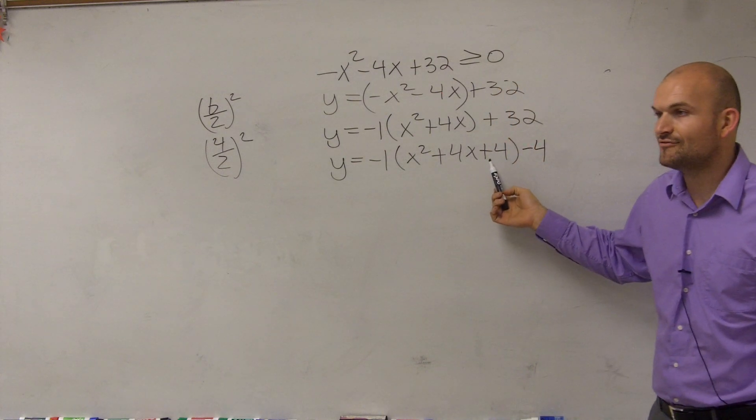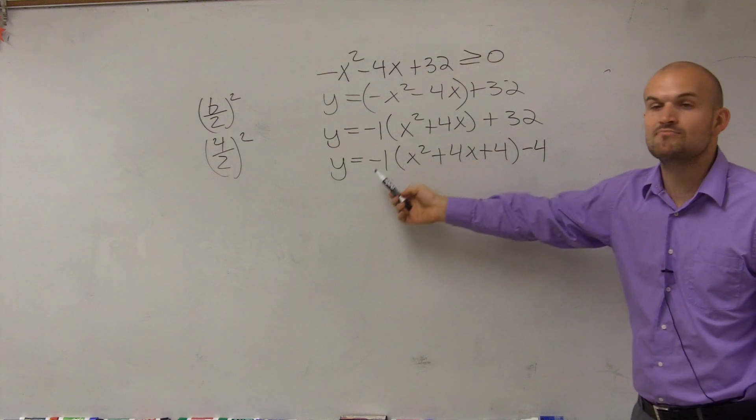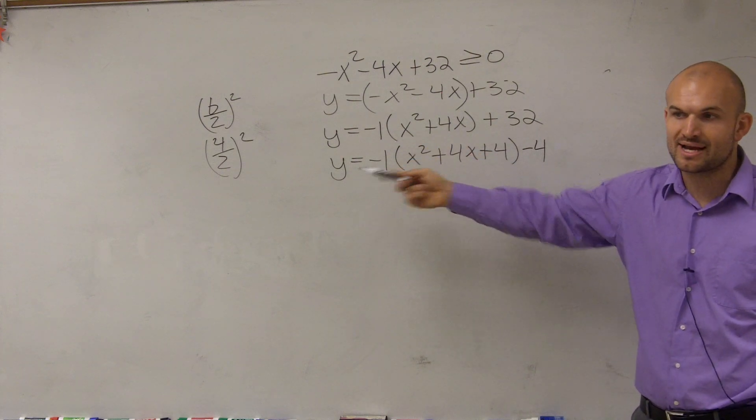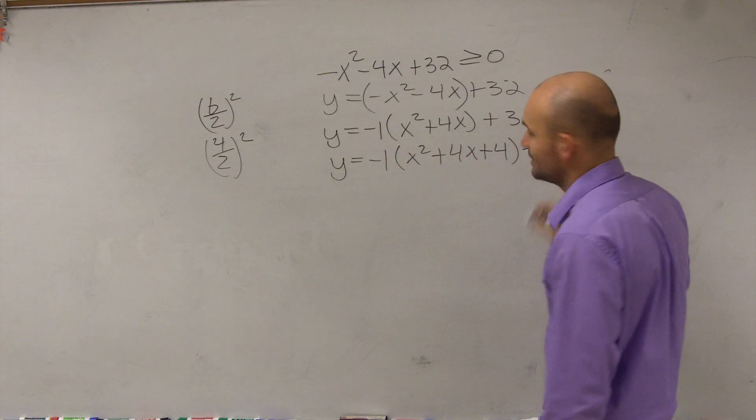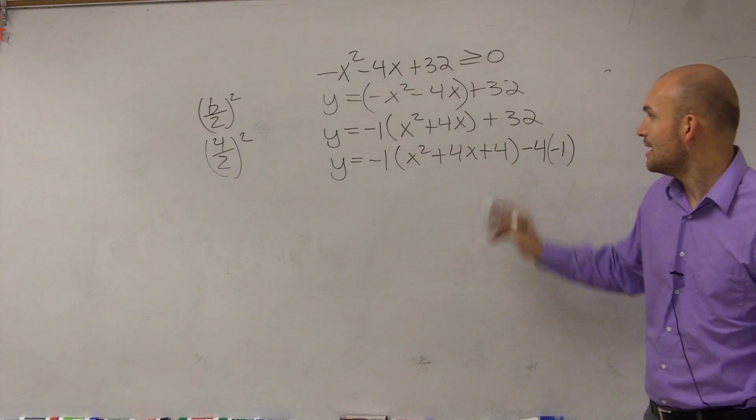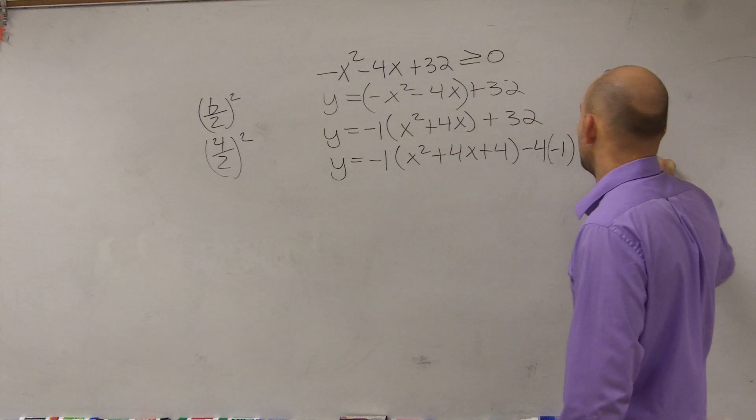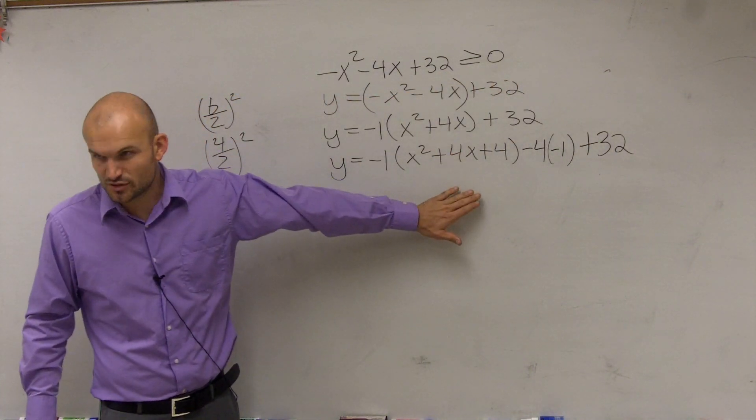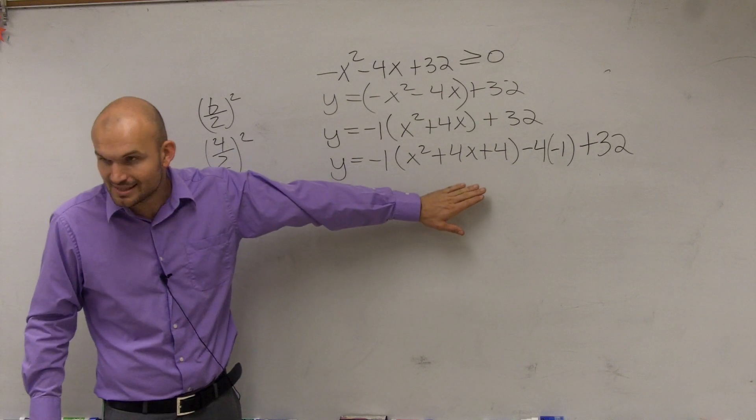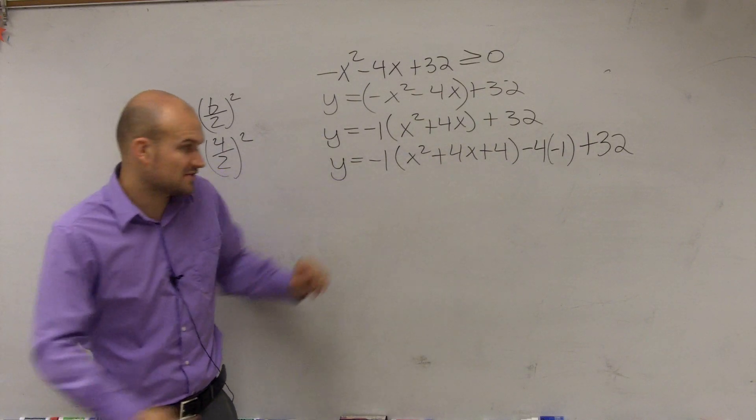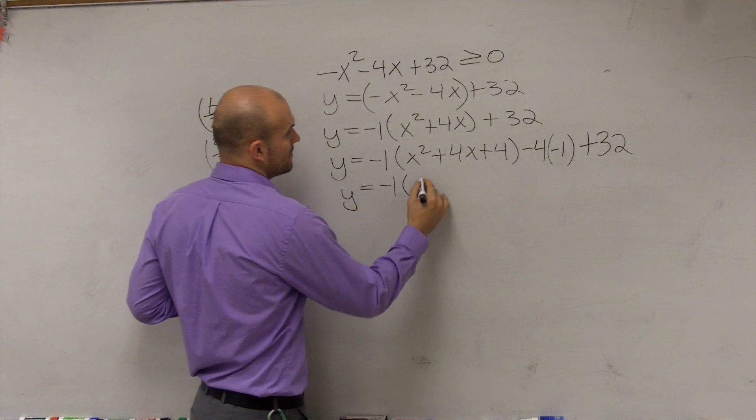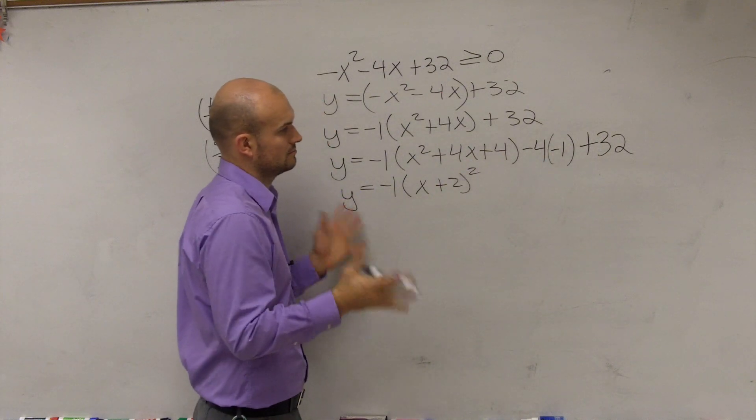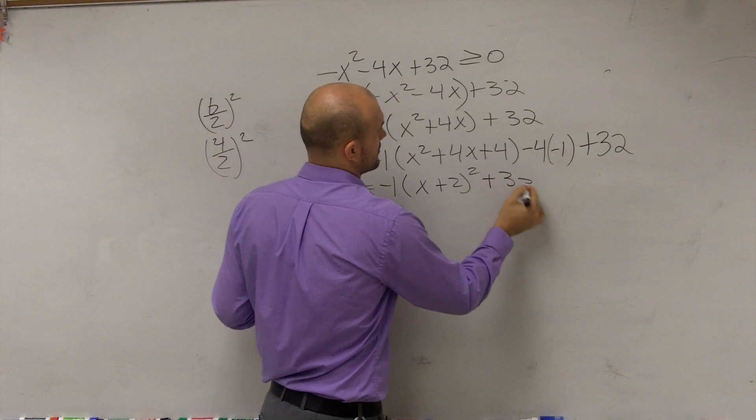But remember, am I really adding 4? I'm adding a 4 that's being multiplied by negative 1. When I added that 4 inside the parentheses, it's being multiplied by negative 1. Therefore, this 4 needs to be multiplied by negative 1. And then I still have a 32 on the outside. So now, we can write this. This is a perfect square trinomial. We've been practicing these a lot. A perfect square trinomial can be written as a perfect square. y equals negative 1 times (x plus 2) squared. Negative 1 times 4 is negative 4, plus 32 is 36.